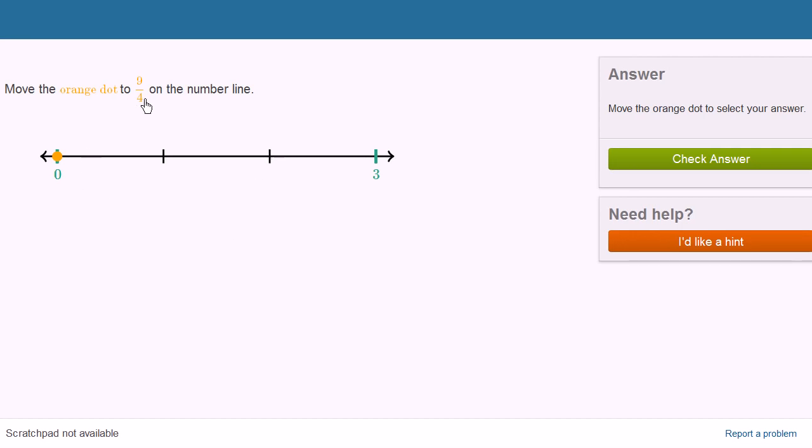There's two ways of thinking about 9 fourths. One way is to try to convert to a mixed number. 4 goes into 9 two times, and you'll have 1 left over.